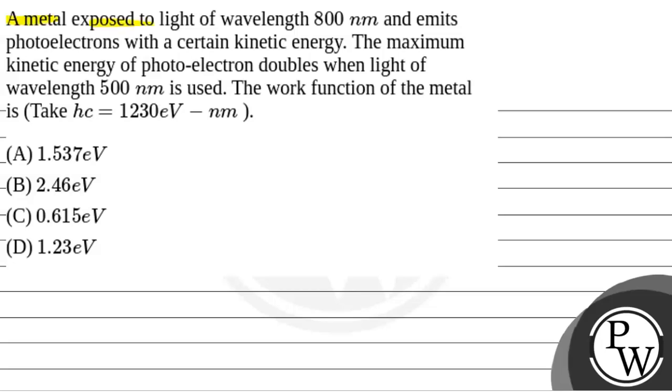The question says that a metal exposed to light of wavelength 800 nanometer emits photoelectrons with a certain kinetic energy. The maximum kinetic energy of photoelectrons doubles when light of wavelength 500 nanometer is used. The work function of the metal is, take Hc is equal to 1230 electron volt nanometer.